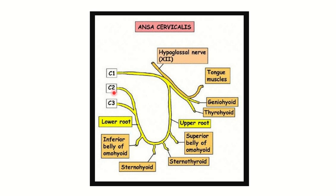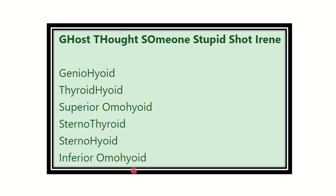Another picture shows the ansa cervicalis, which arises from cervical one, cervical two, and cervical three, and supplies these muscles: geniohyoid, thyrohyoid, omohyoid, sternothyroid, and sternohyoid. A mnemonic to remember these is: 'Ghost thought someone is stupid short' — G for geniohyoid, thyrohyoid, superior and inferior omohyoid, sternothyroid, and sternohyoid.